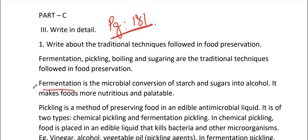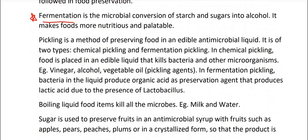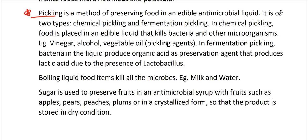Next, pickling is a method of preserving food in an edible antimicrobial liquid. It is of two types, chemical pickling and fermentation pickling. In chemical pickling, food is placed in an edible liquid that kills bacteria and other microorganisms. Example, vinegar, alcohol, vegetable oil. In fermentation pickling, bacteria in the liquid produce organic acid as preservation agents that produces lactic acid due to the presence of lactobacillus.